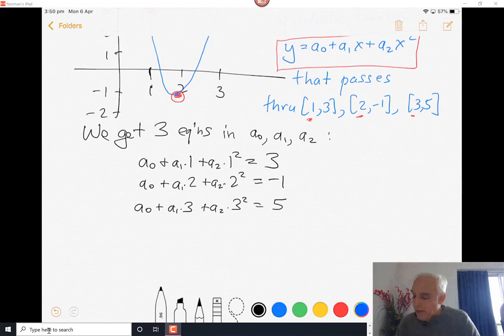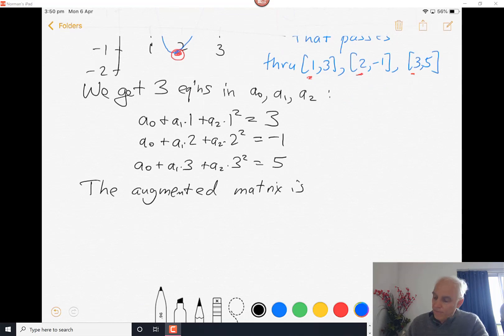So the augmented matrix is 1, 1, 1, and 3; then 1, 2, and 4 with a minus 1; and 1, 3, 9, and a 5.